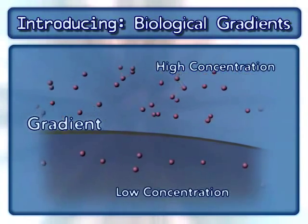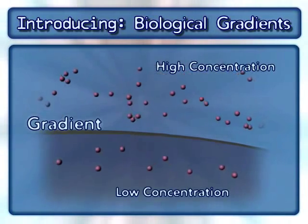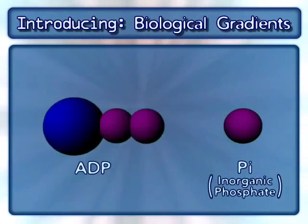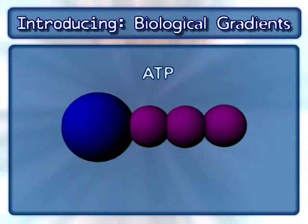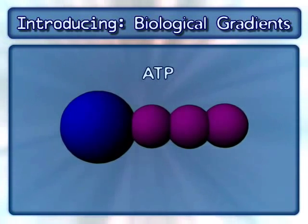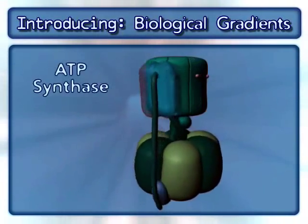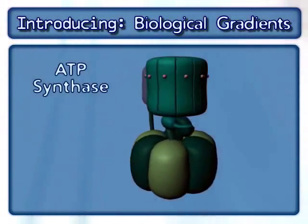This animation will demonstrate how the potential energy that results from a hydrogen ion gradient uses ADP and inorganic phosphate, also known as PI, to synthesize ATP. This process involves an enzyme complex called ATP synthase.